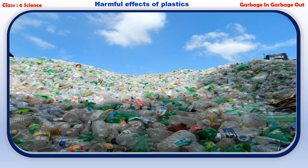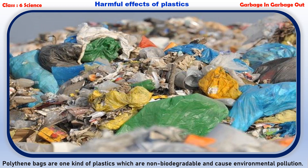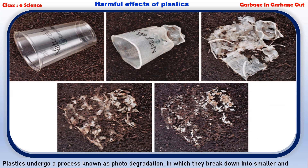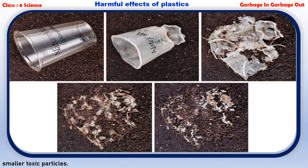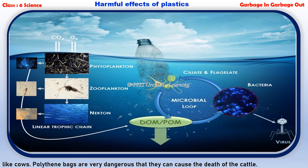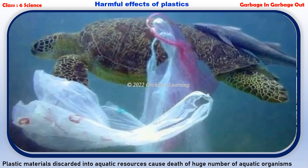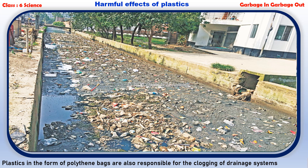Harmful effects of plastics: though plastic is easy and comfortable to use, it is very harmful in terms of health and environment. Polythene bags are a kind of plastic which are non-biodegradable and cause environmental pollution. Plastics undergo a process known as photodegradation, in which they break down into smaller toxic particles. These particles contaminate soil and water and enter the food chain when eaten accidentally by animals. Polythene bags are very dangerous and can cause the death of cattle. Plastic materials discarded into aquatic resources cause the death of a huge number of aquatic organisms. Plastics in the form of polythene bags are also responsible for the clogging of drainage systems.